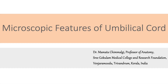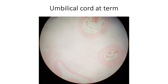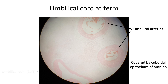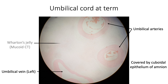In this video, let us consider the microscopic features of the umbilical cord. The umbilical cord at term is covered by cuboidal epithelium of the amnion. The section shows two umbilical arteries and one umbilical vein embedded in mucoid connective tissue known as Wharton's jelly.